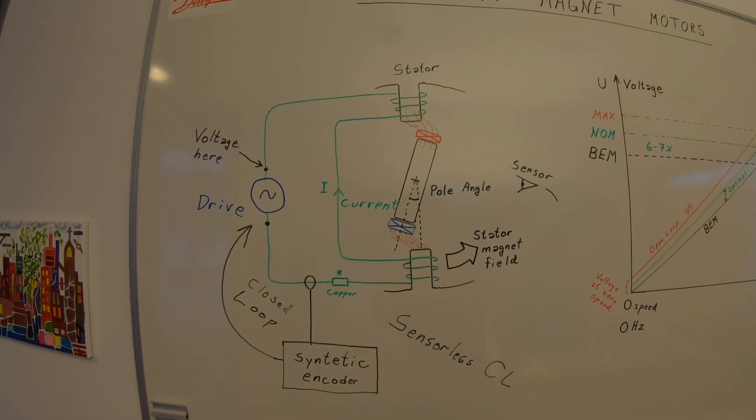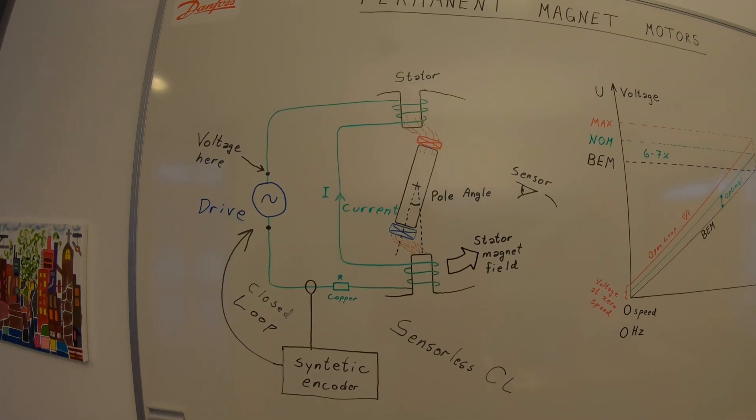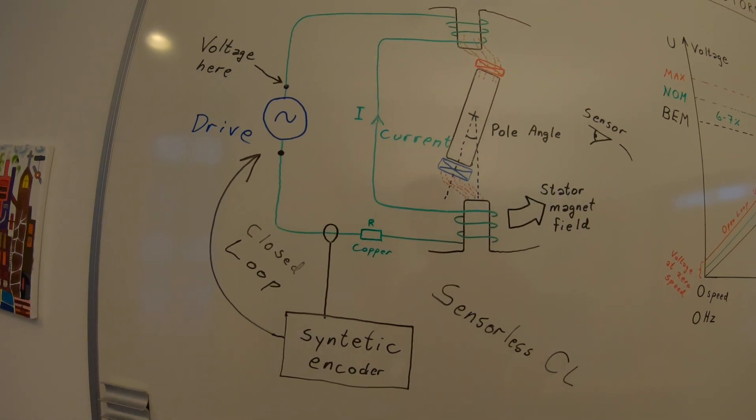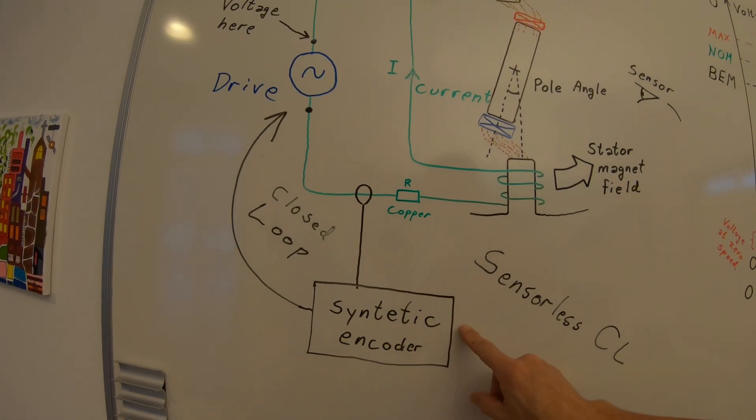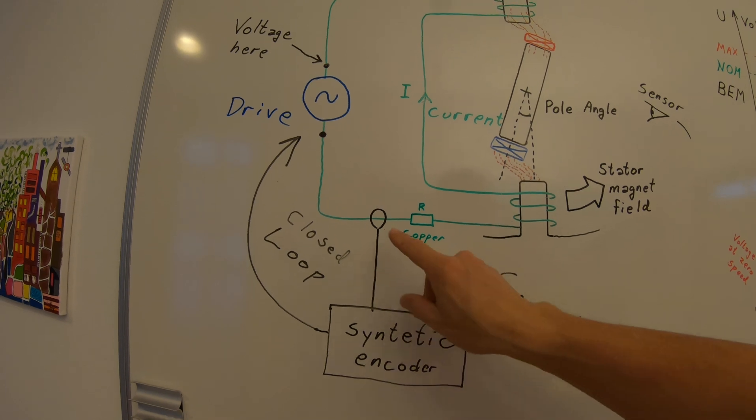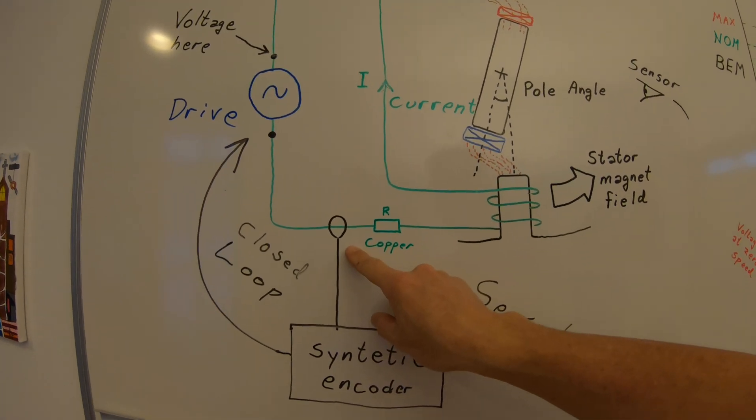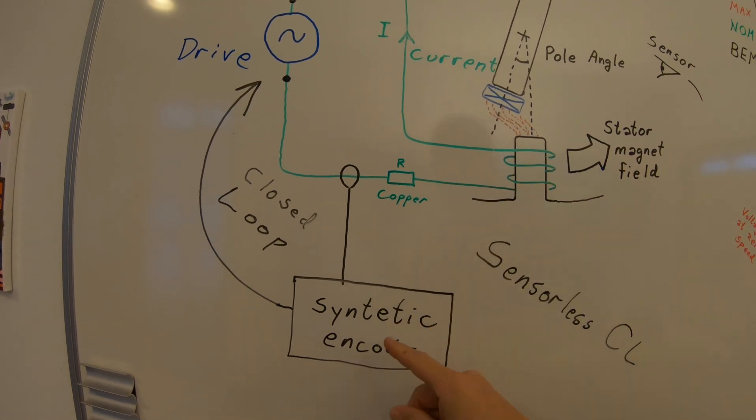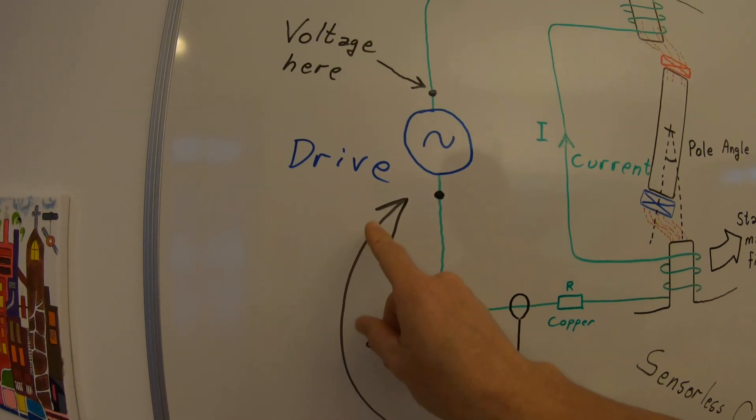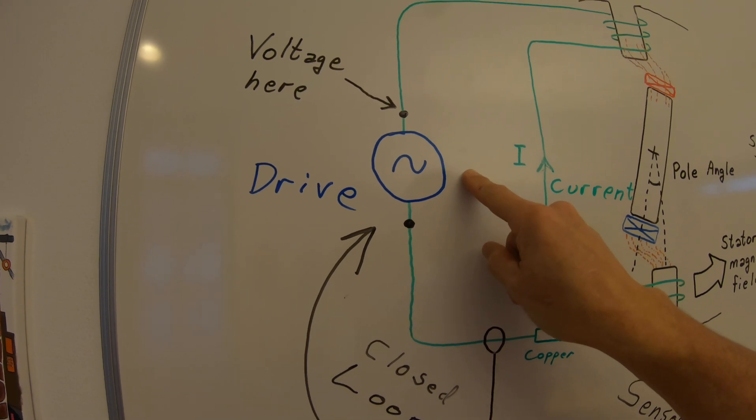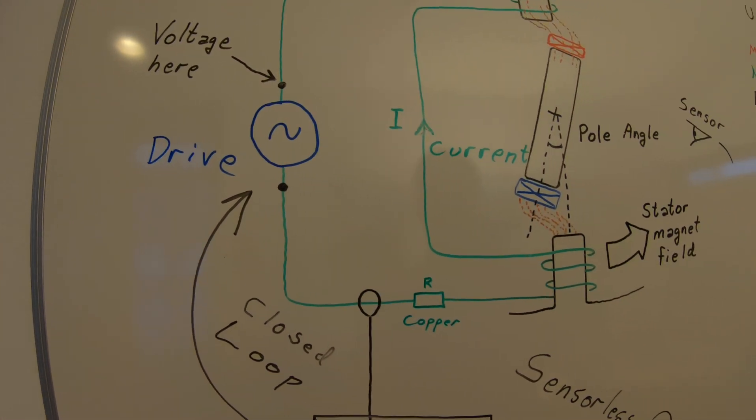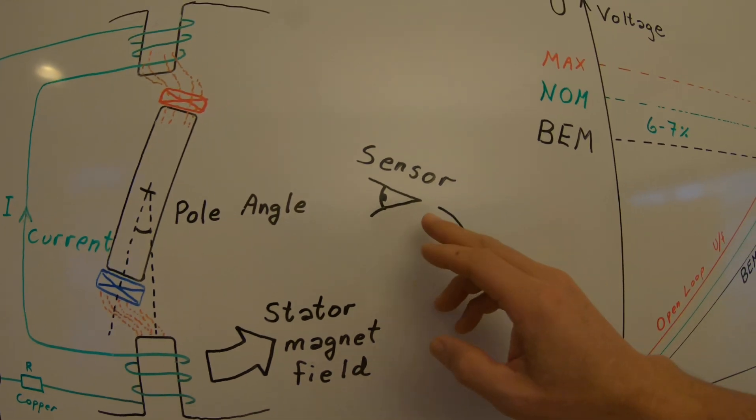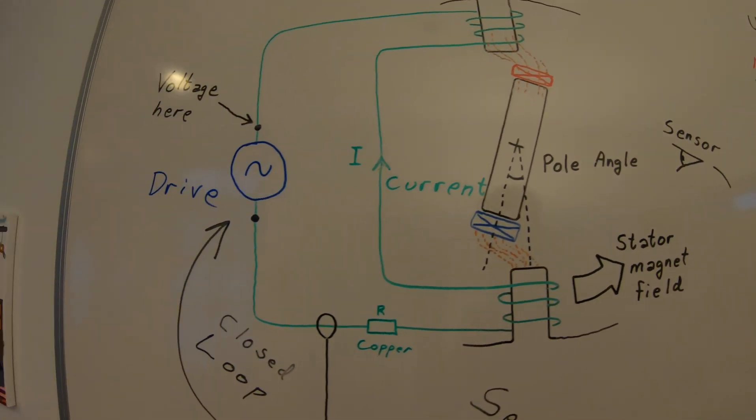What about sensorless closed loop motor control? Sensorless closed loop is based on a synthetic encoder in the drive software. We sense the motor current and motor voltage especially the curve form coming back from the stator winding and create a synthetic encoder which is used in the motor closed loop control.